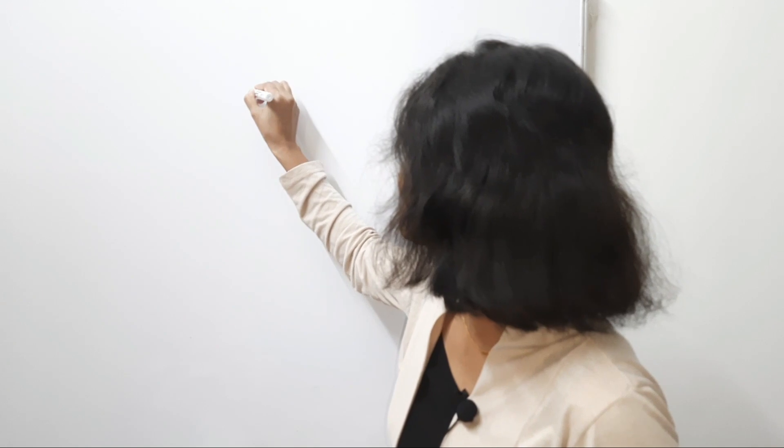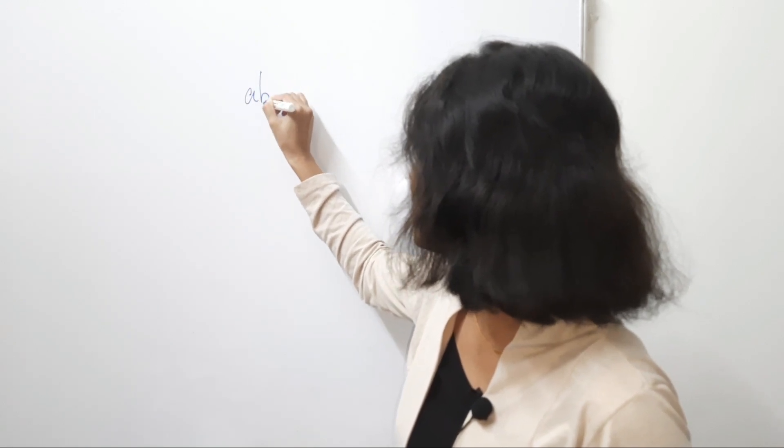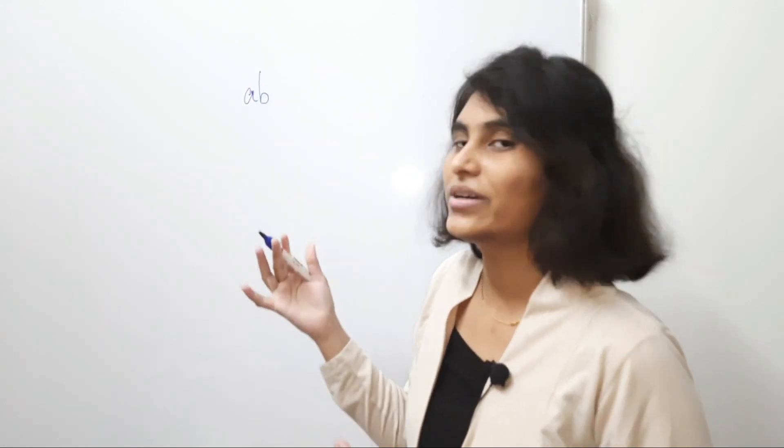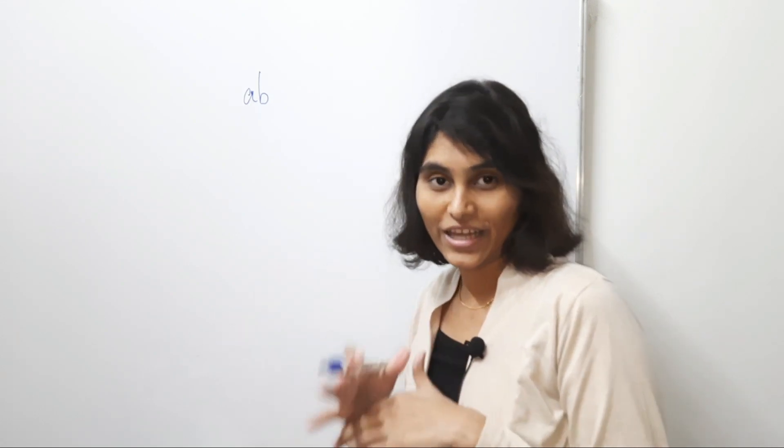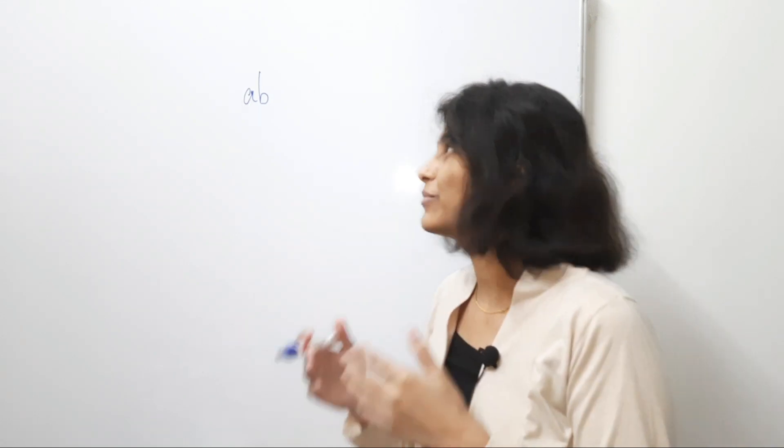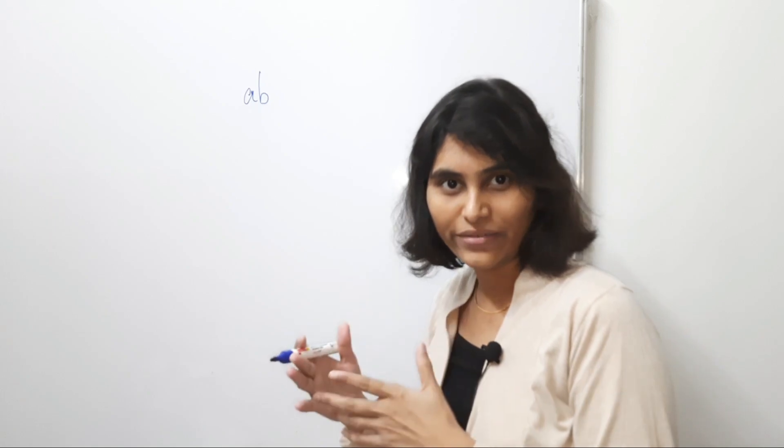Step number one is we were taking birthday. So, it can be a two digit number or a single digit. So, let's take it as say AB. Suppose it is single digit number, then A is zero. Now, the next step is we are multiplying this number by five. Right?